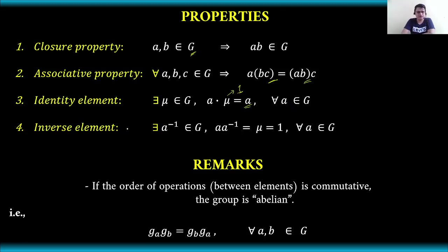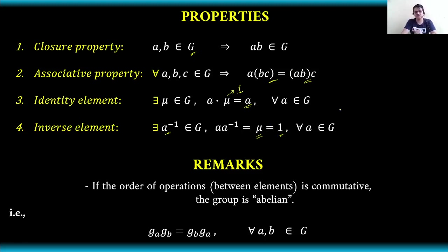We also have the inverse element: there exists an inverse of A in the group such that A multiplied by its inverse equals the identity element. This is because the identity element has a value of one. This holds for all A that are elements of the group.